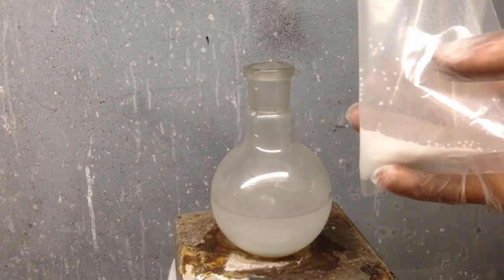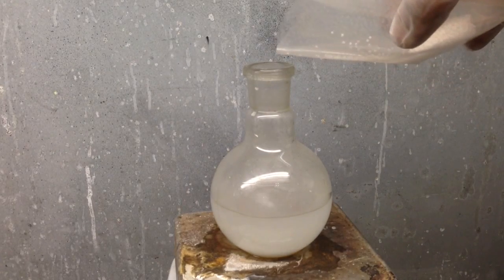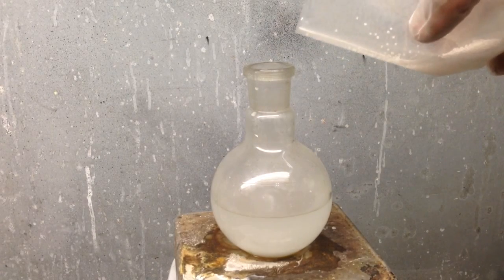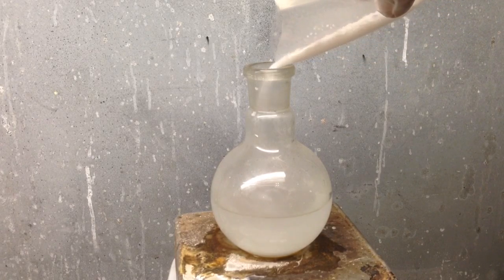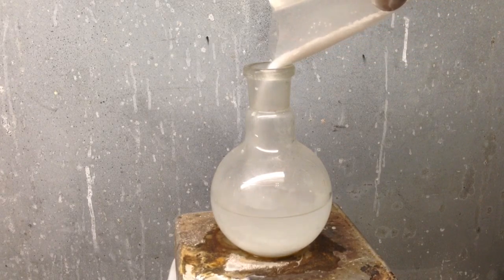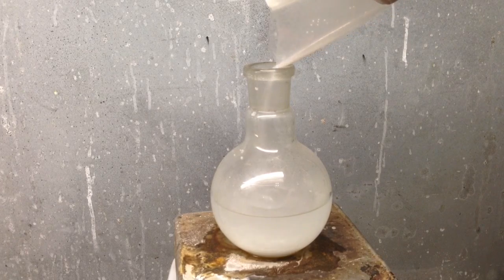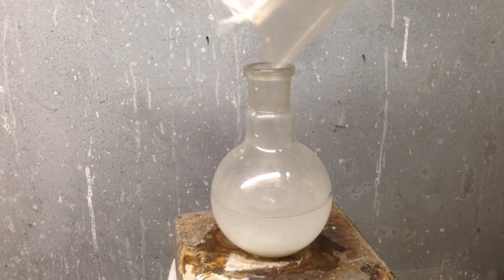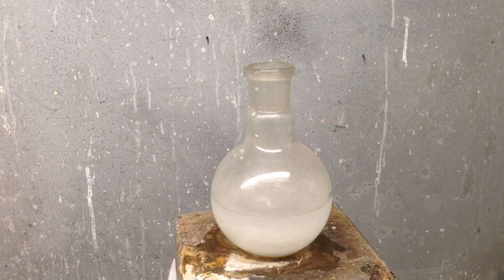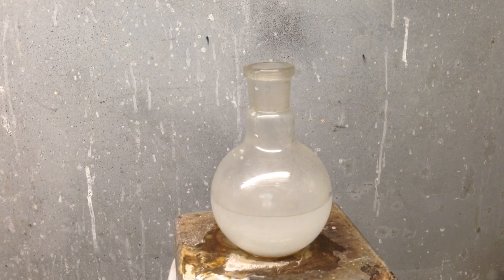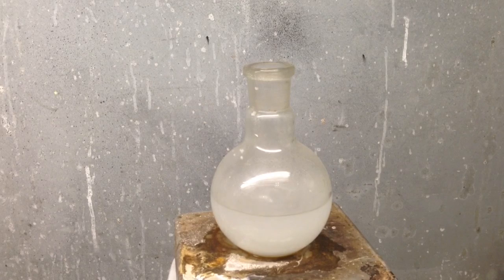So I added about half of the sodium hydroxide at first. It seems pretty well dissolved so far. So I'm going to go ahead and add the other half. We'll go ahead and let the rest of the sodium hydroxide dissolve into the solution before we start adding the silica gel.